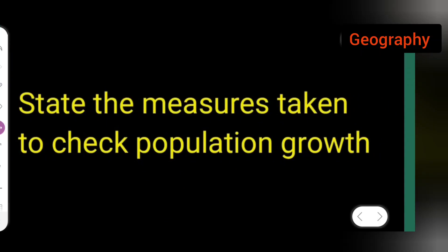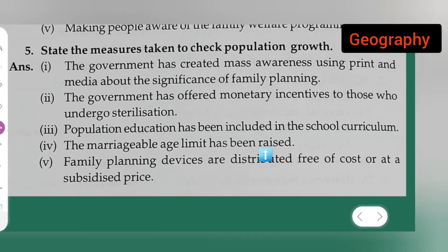This class, the question is taken from Class 9 Geography. The question is: state the measures taken to check population growth. So let me first have you all write the question — state the measures taken to check population growth.